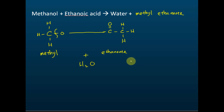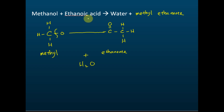If you know the alcohol and the carboxylic acid used, then we can name the ester easily by referring to their names. If this is methanol, it will produce methyl. If this is ethanol, it will produce ethyl. If this is propanol, it will produce propyl. And if this is methanoic acid, it will become methanoate. If it's ethanoic acid, it will become ethanoate. If it's propanoic acid, it will become propanoate. That's one way to name esters.